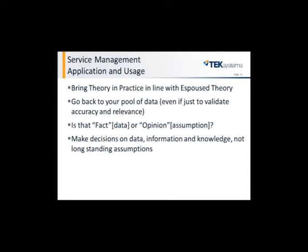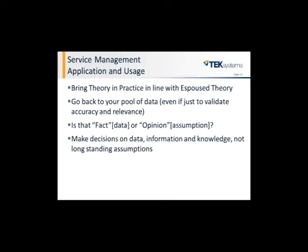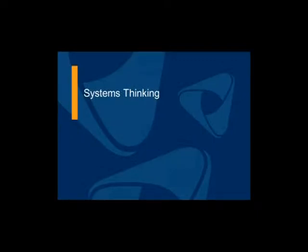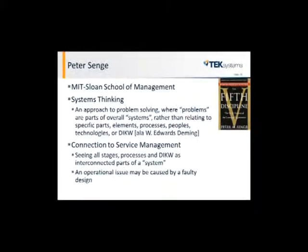So how do we use this effectively? First, we have to make sure we're bringing theory in use in line with our espoused theory. If we say we're going to have a mindset of continual improvement, we actually have to show that improvement. Each time we're doing something, go back to your pool of data and ask: is it still accurate, is it still relevant? If it's been a week, a month, a year, 10 or 20 years, it's probably time to check your data. Ask that question: is this fact or opinion? Show me the data. Otherwise it's probably just an opinion and you're caught in the loop of inference. Make decisions on that transformation of data, information, knowledge — not long-standing assumptions.